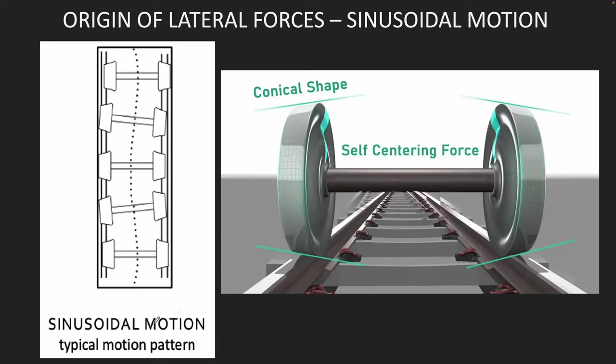Another reason for them to be conical is to have a self-centering motion. If a train starts going away from the center, the conical wheel brings them back to the center. Same way if a train starts going in the other direction, the conical wheels bring it back to the center.